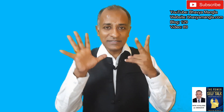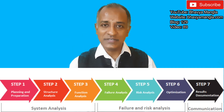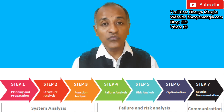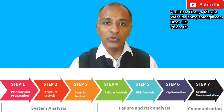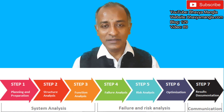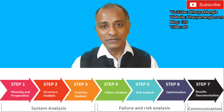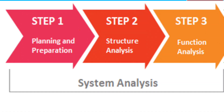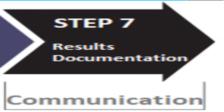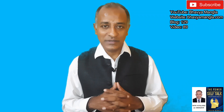There are seven key steps as per FMEA 1st Edition. Those seven steps are: first, planning and preparation; second, structure analysis; third, function analysis; fourth, failure analysis; fifth, risk analysis; sixth, optimization; and seventh, results and documentation. Steps one through three are primarily about system analysis, steps four through six cover failure analysis and risk mitigation, and step seven is about risk communication.